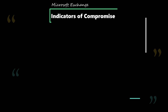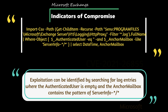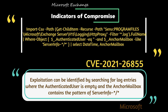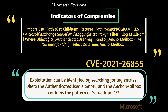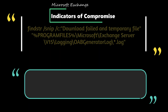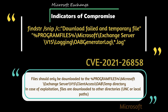If you want to see if you were compromised by CVE-2021-26855, Microsoft states exploitation can be identified by searching for log entries where the authenticated user is empty and the anchor mailbox contains the pattern of server info tilde asterisk forward slash asterisk.